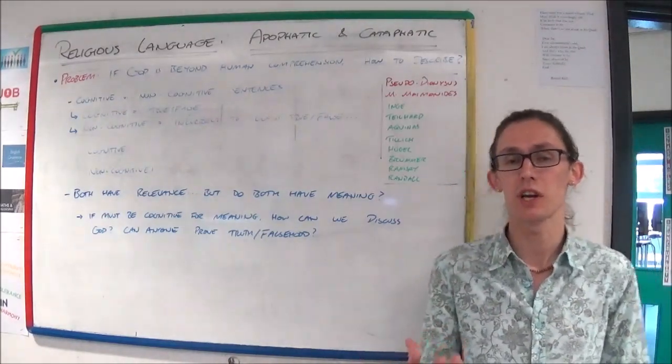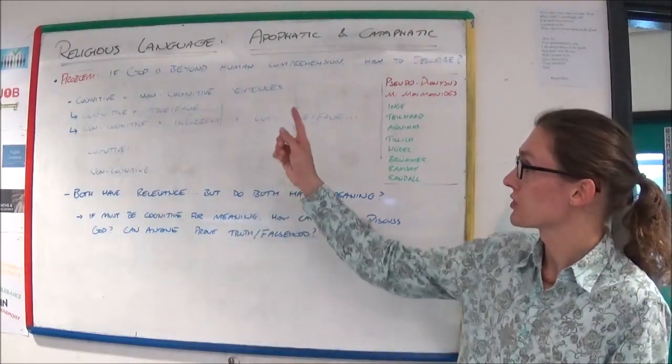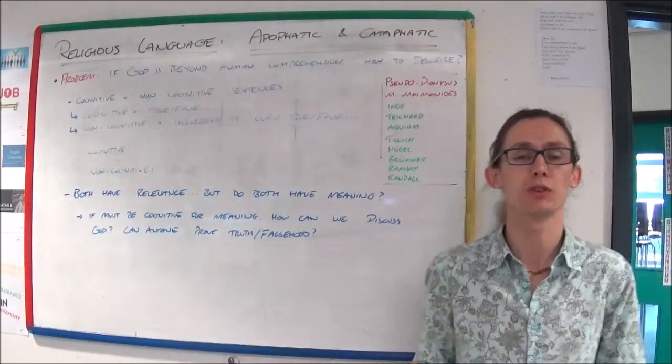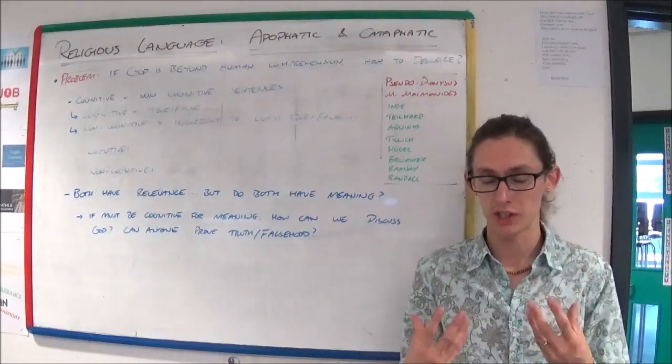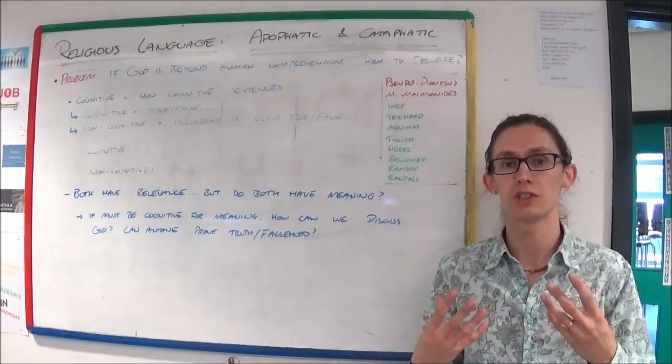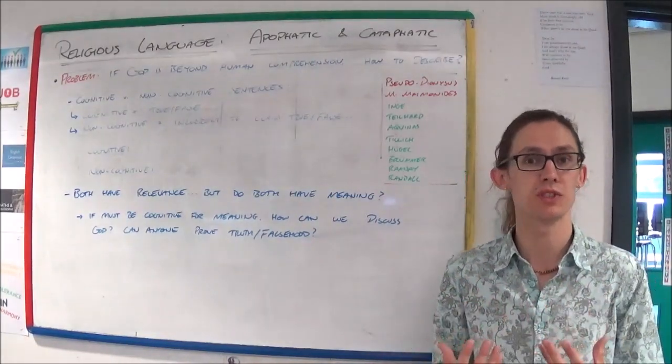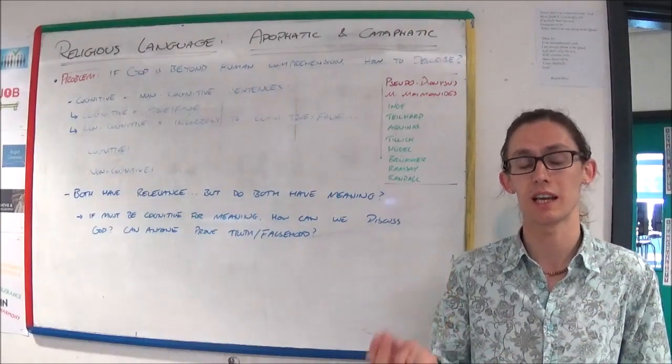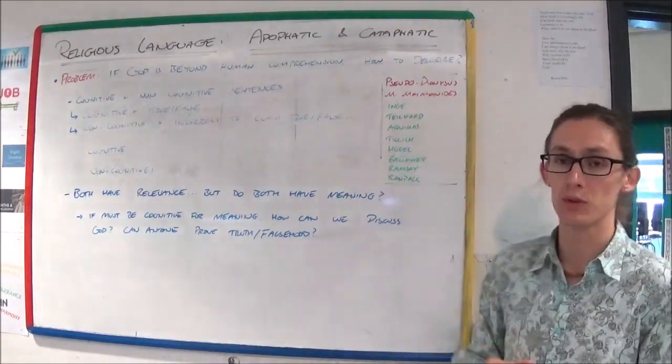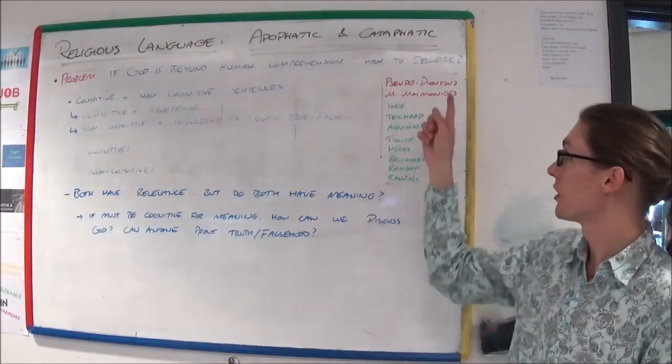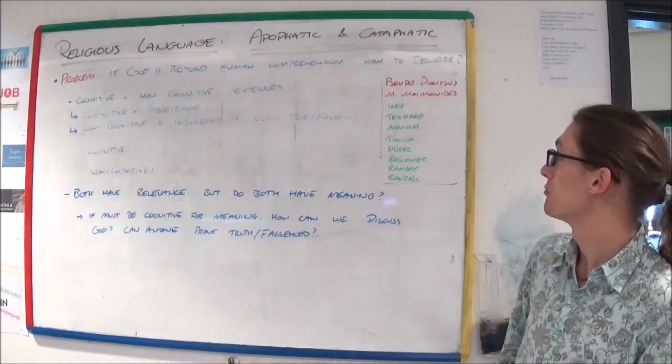To understand this we need to go over first what cognitive and non-cognitive sentences are. It's a bit of logic and a bit of knowledge that needs to be put into place to understand the apophatic and the cataphatic way. We will be looking at the thoughts of Pseudo-Dionysus, of Moses and Maimonides.